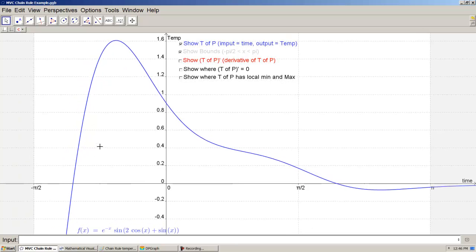And I can already see that the maximum of this function, the maximum temperature, is going to be a little greater than 1.6. And the minimum temperature looks to happen around here somewhere, and it's going to be probably like negative 0.1. Already we can make those guesses.